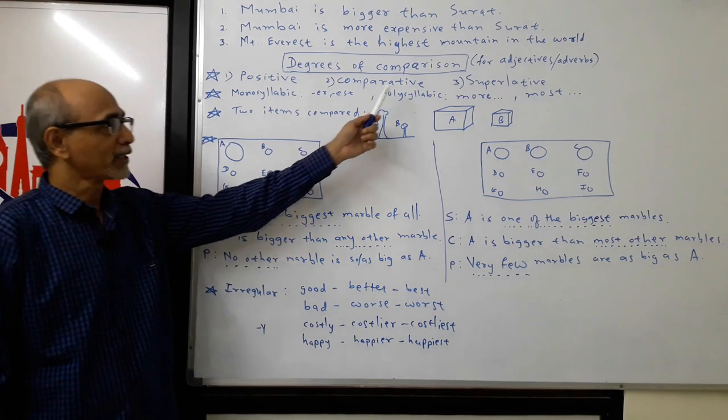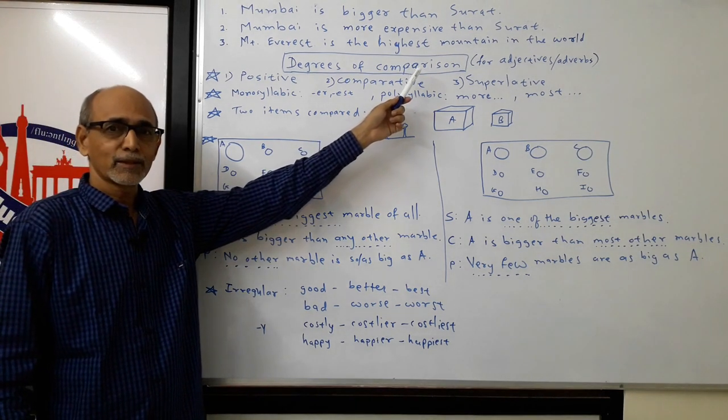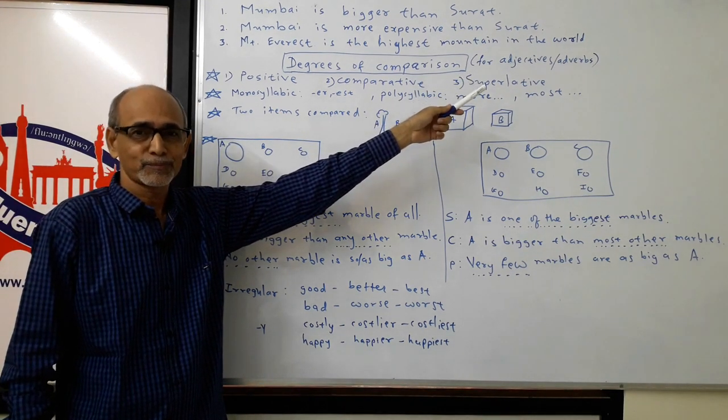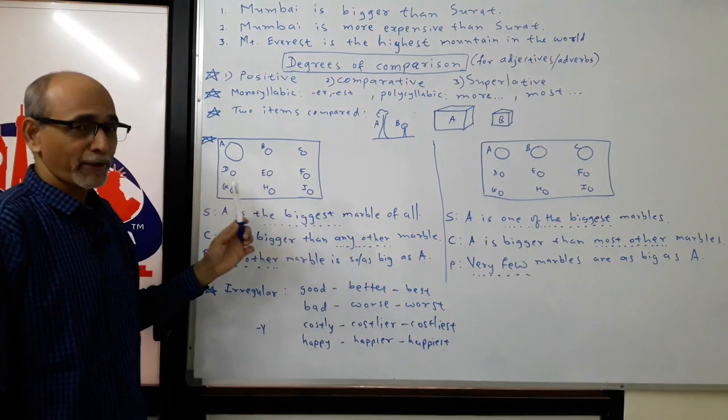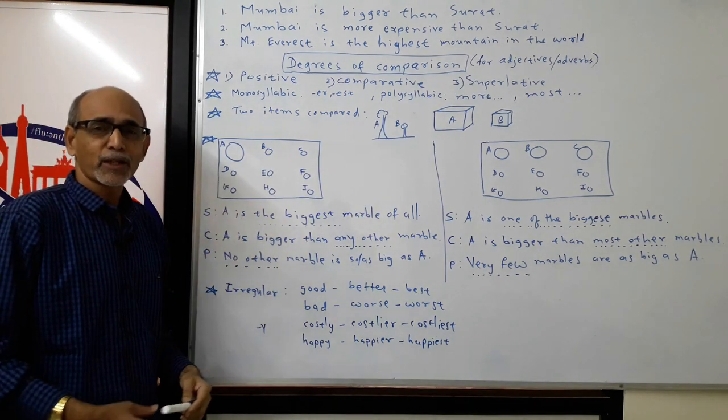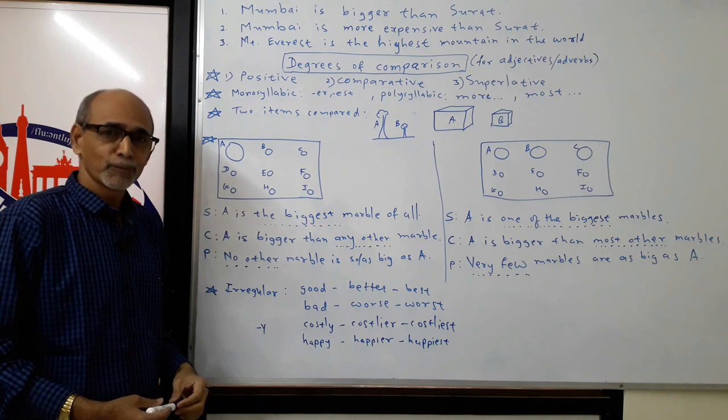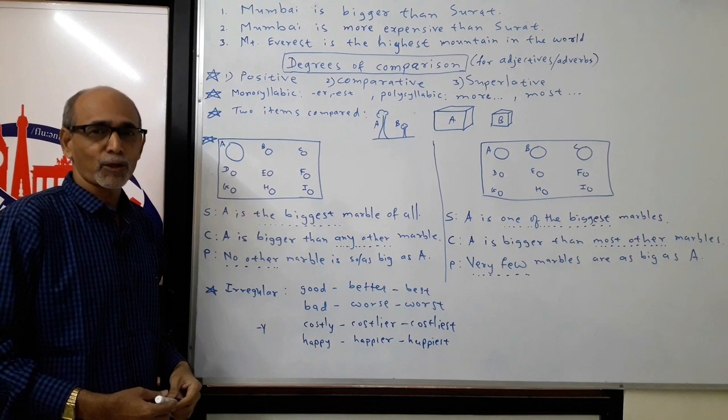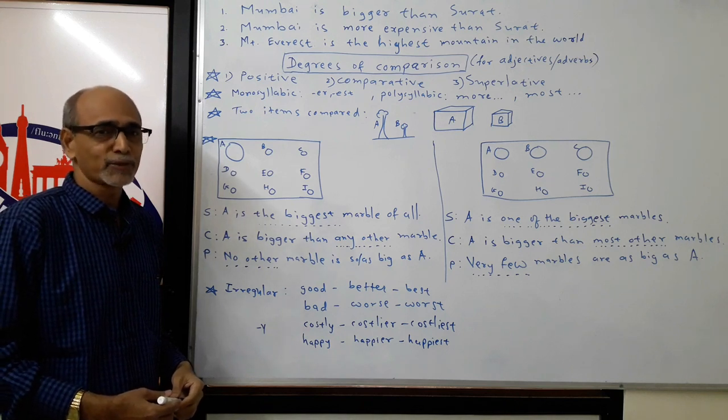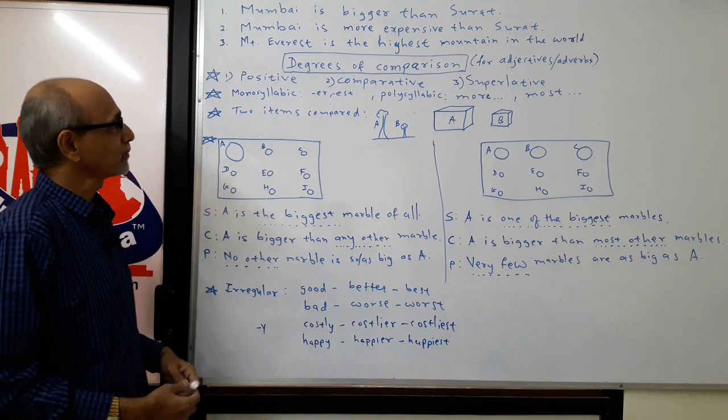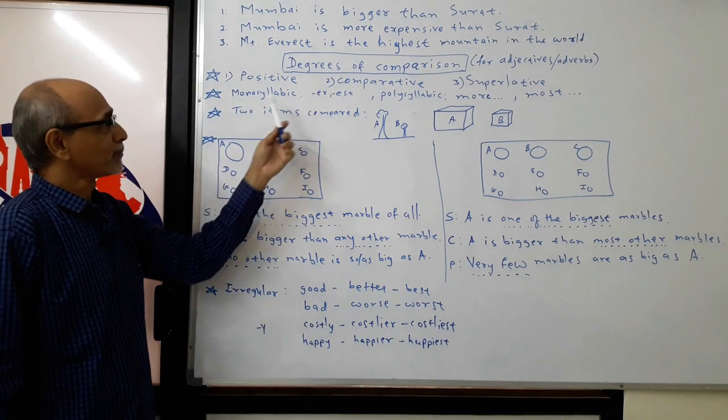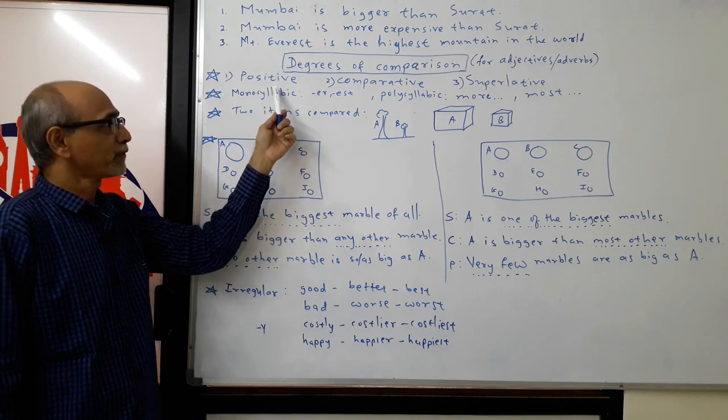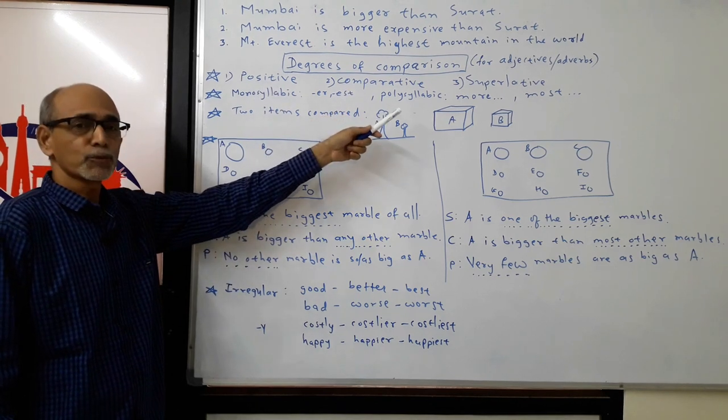I'm sure you know that degrees of comparison are used for either adjectives or adverbs. If you have any doubts about adjectives or adverbs, you can watch our video on Parts of Speech, where we clearly explained what nouns, adjectives, verbs, and adverbs are. We know there are three types of degrees: positive, comparative, and superlative.